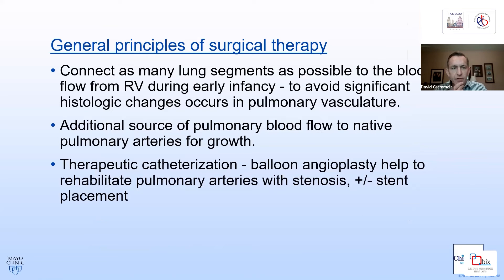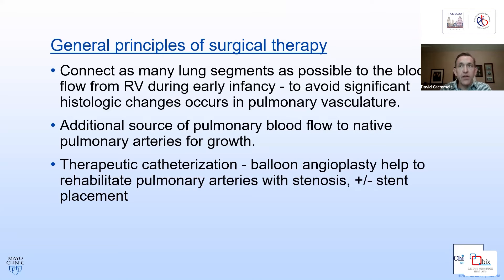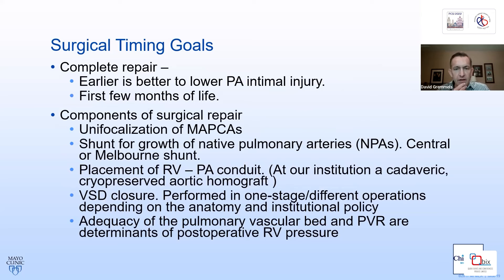Our principles of surgical therapy: we connect as many lung segments as possible to the right ventricle as early as possible. The longer they remain in contact with systemic circulation, we tend to see histologic changes of stenosis near the aorta, making the unifocalization procedure more difficult. We will assess for native pulmonary arteries and augment flow with either a Melbourne or central shunt for growth. Therapeutic catheterization, balloon angioplasty, and stent placement are also a critical part of evaluation and post-intervention management.